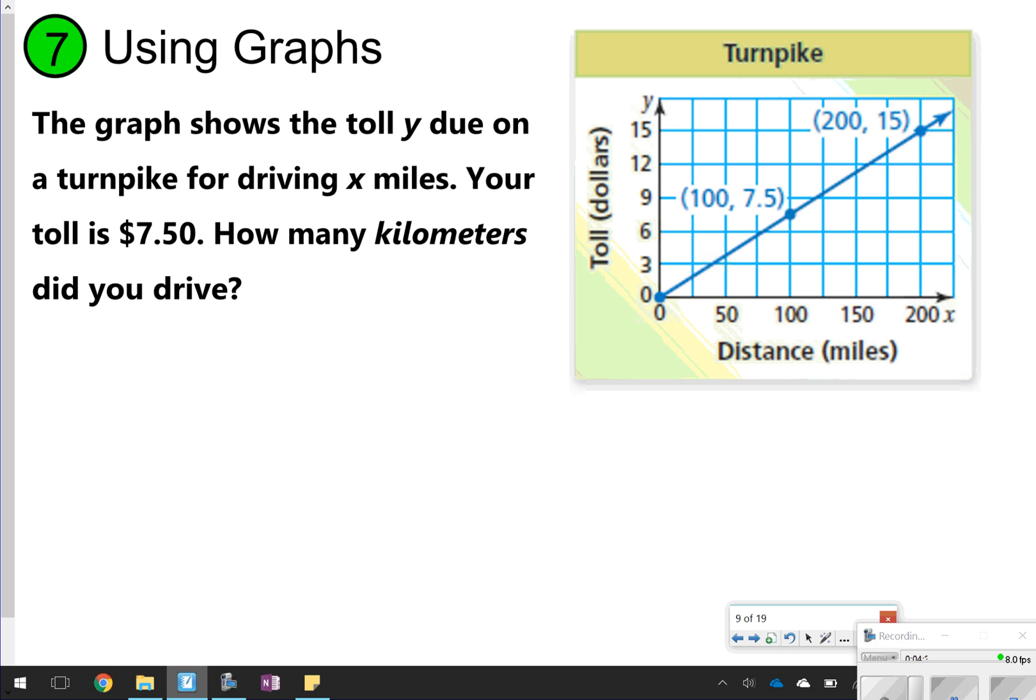This one is pretty easy because you can already see that point on the graph. Remember, x is always the first number and y is always the second one. And so this point, 100, 7.5, is 100 miles and $7.50. So you did drive 100 miles.